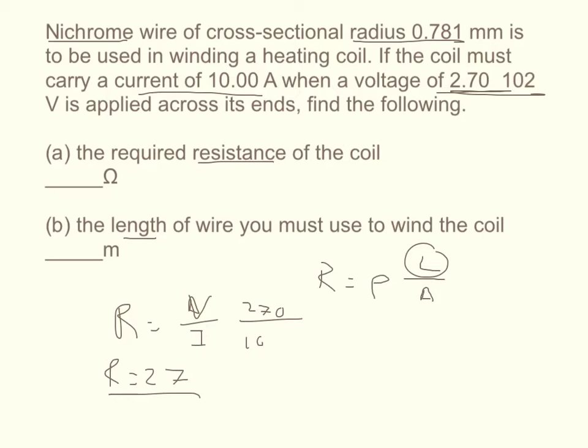Now the cross-sectional area, if you remember, the surface area of a circle is equal to pi times the radius squared, but we want our units in meters. So we're going to convert 0.781 millimeters to 0.781 times 10 to the negative 3rd meters.